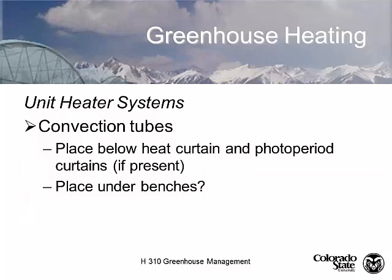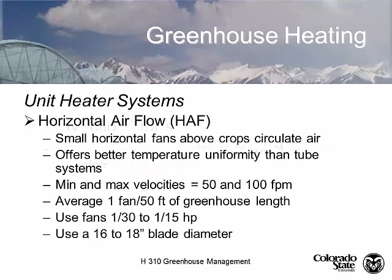You can also use convection tubes for under-bench heating — mount unit heaters low to the ground and run the convection tube under the benches to get air movement and heat rising. For most greenhouse air distribution, the modern choice is what's called a horizontal airflow fan — HAF fans. It's H-A-F, not half. A horizontal fan used to circulate temperature and give more uniformity.